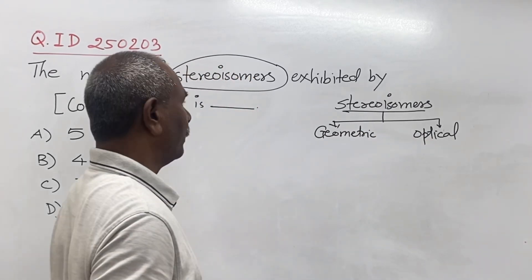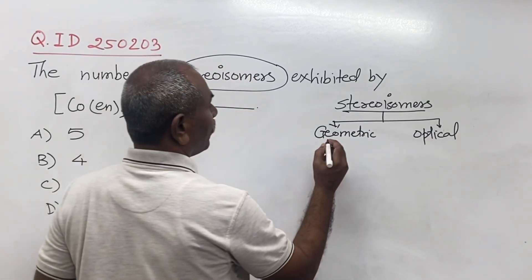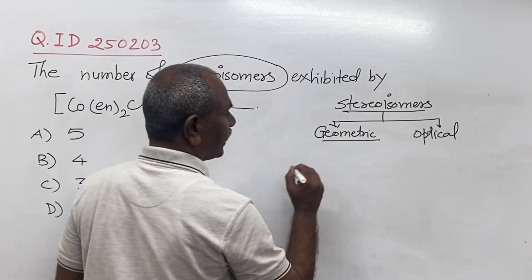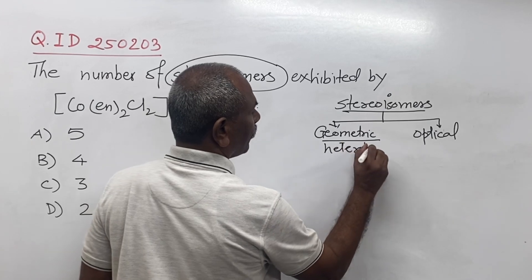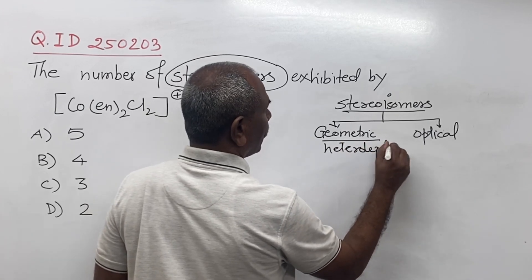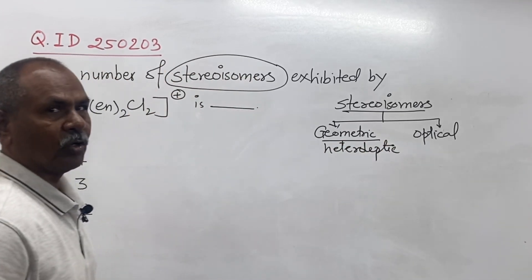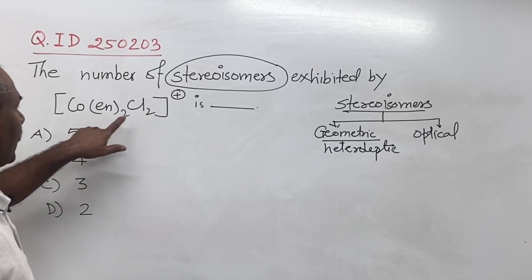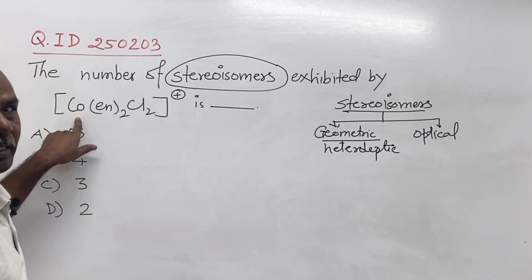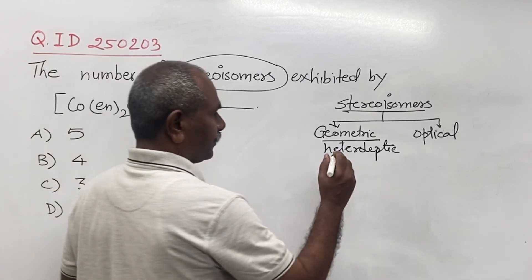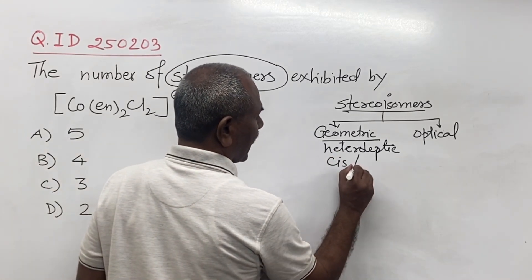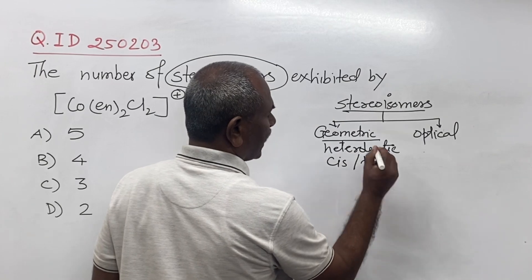Geometric isomerism is particularly observed in heteroleptic complexes. Heteroleptic complexes means here two different ligands are bonded to the central metal ion, that is the cobalt. So here cis and trans isomers are observed.